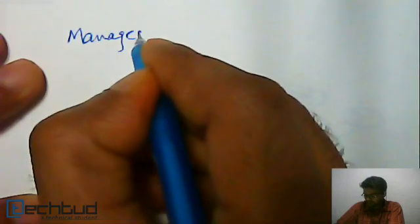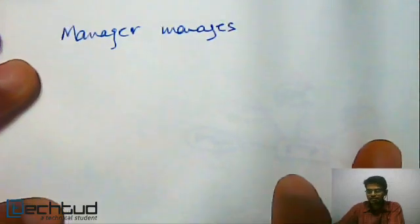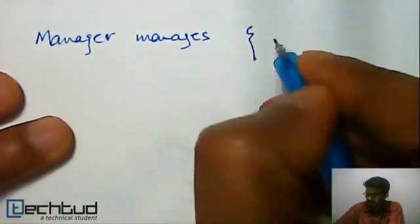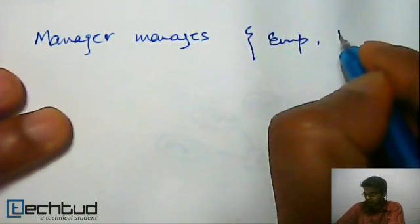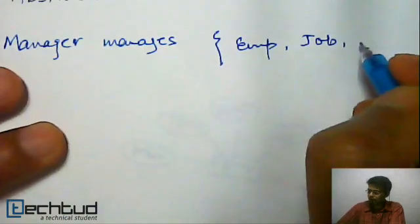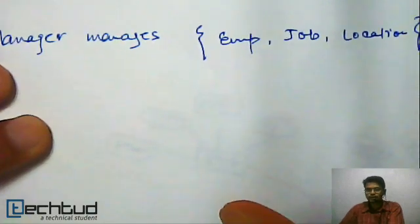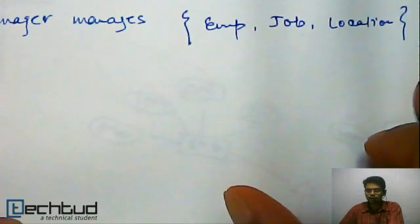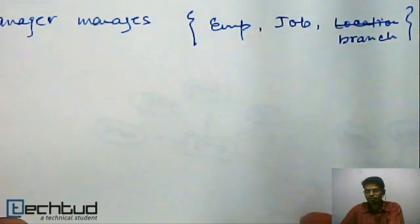Let's start with an example. Consider a situation where a manager manages a combination of something — that is, an employee, his job, and his location, or we can say branch. So a manager manages employee, job, and branch.